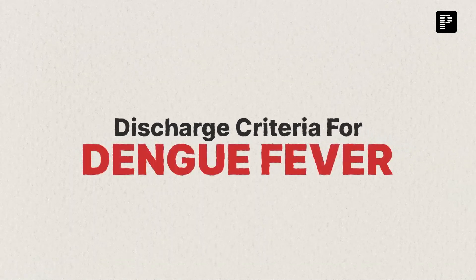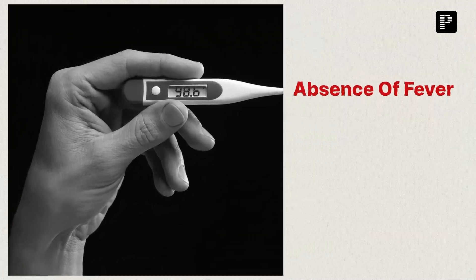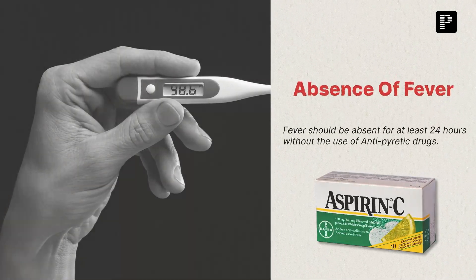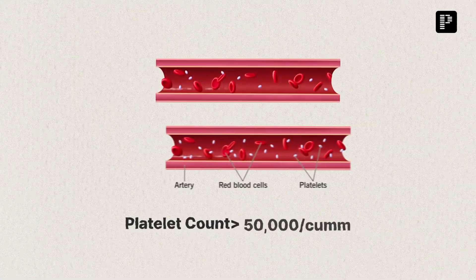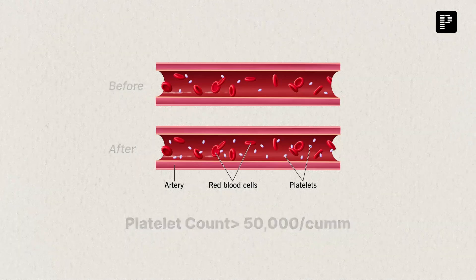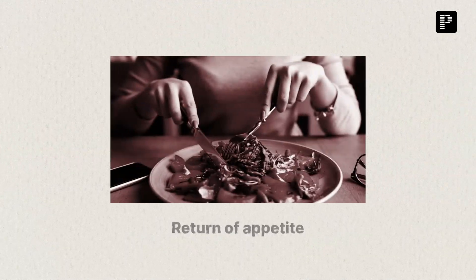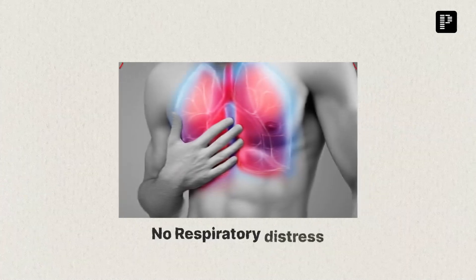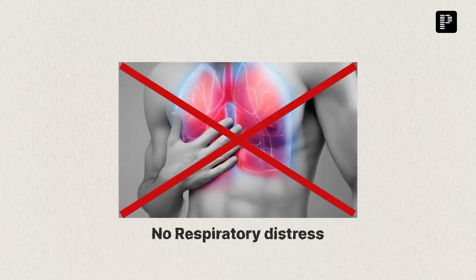A patient can be discharged if they meet the following criteria: absence of fever for at least 24 hours without the use of antipyretic drugs, platelet count greater than 50,000, return of appetite, adequate urine output, visible clinical improvement, minimum of 2 to 3 days after recovery from shock, and no respiratory distress from pleural effusion or ascites.